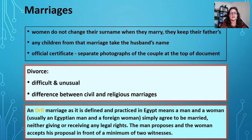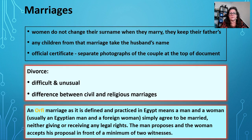For genealogists, an interesting fact is that women don't change their surnames when they get married — they keep their father's name. However, the children from that marriage do take the husband's name. When you get your official marriage certificate, there is a separate photograph of the couple at the top of the document. Divorce is quite difficult and unusual. There is also an Orphi marriage, which could be called a sex licence, where the man and woman agree to be married in front of a lawyer with two witnesses, and therefore they don't have any legal rights.